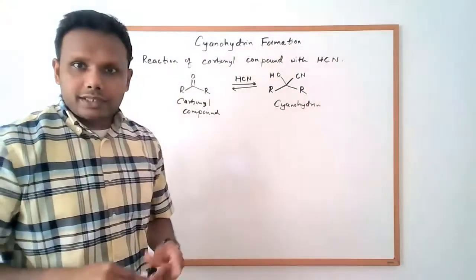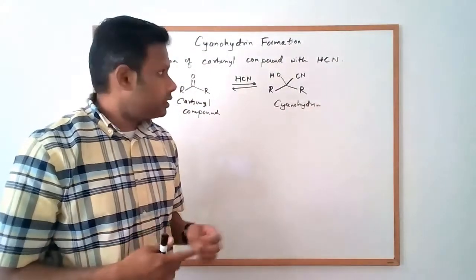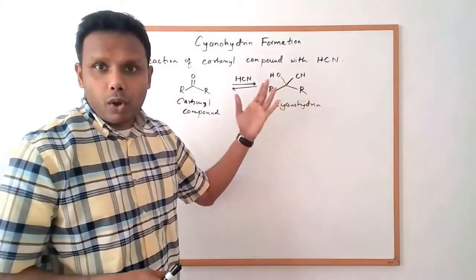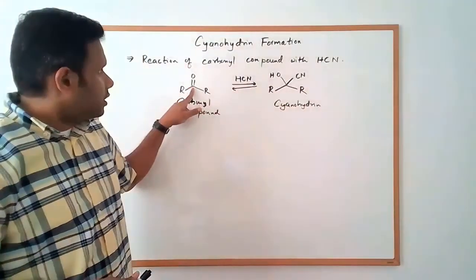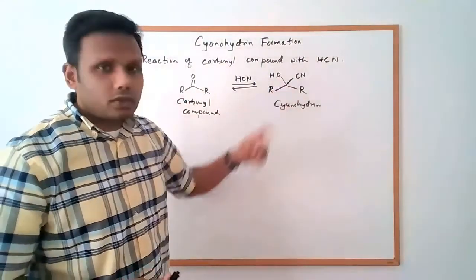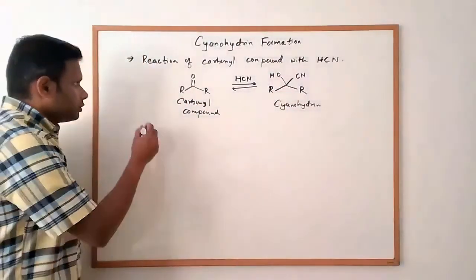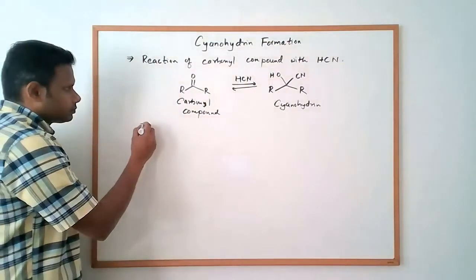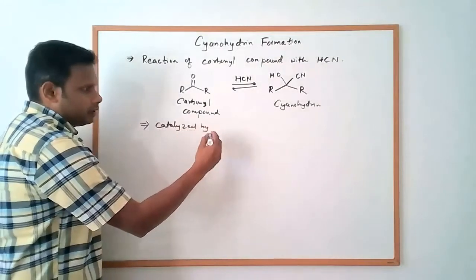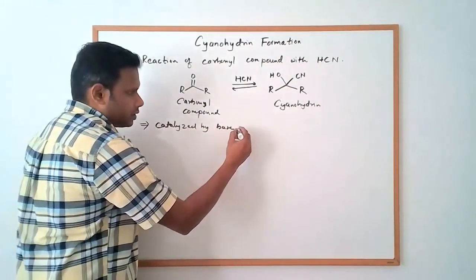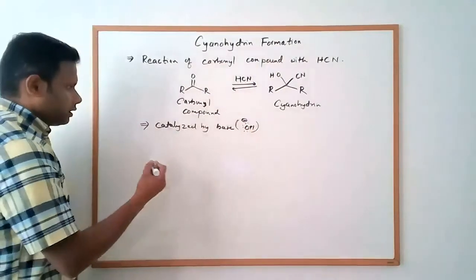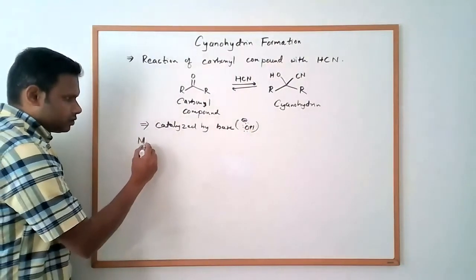Now the cyanohydrin is characterized or it can be easily identified by the presence of a nitrile group and a hydroxyl group on the same carbon atom. So if you look at it, the carbonyl carbon, which had the double bond to the oxygen, now has the hydroxyl group and this nitrile group on it. Now this reaction is catalyzed by base. So if you have a little bit of base, that would help this reaction.